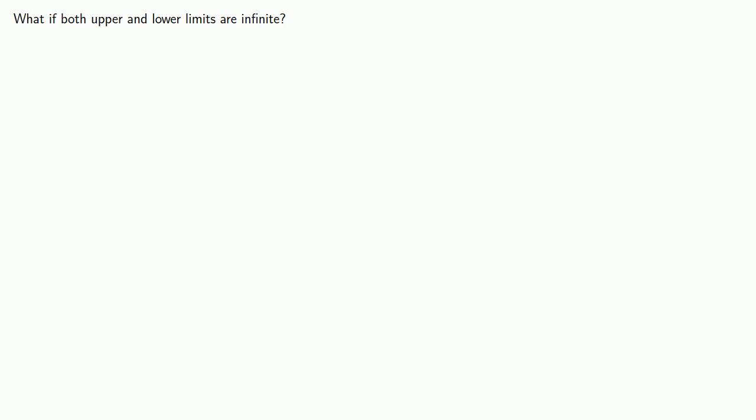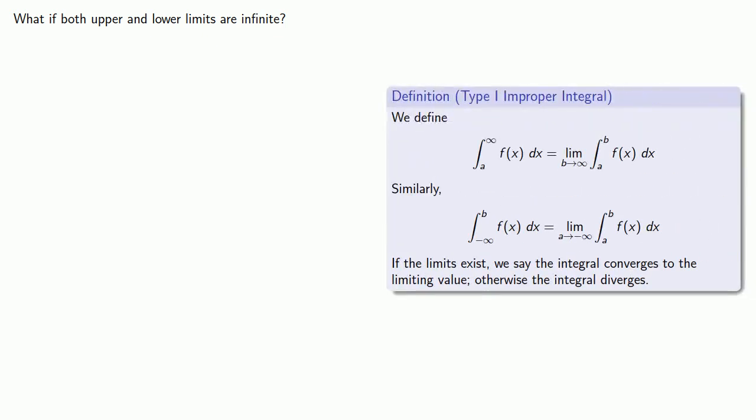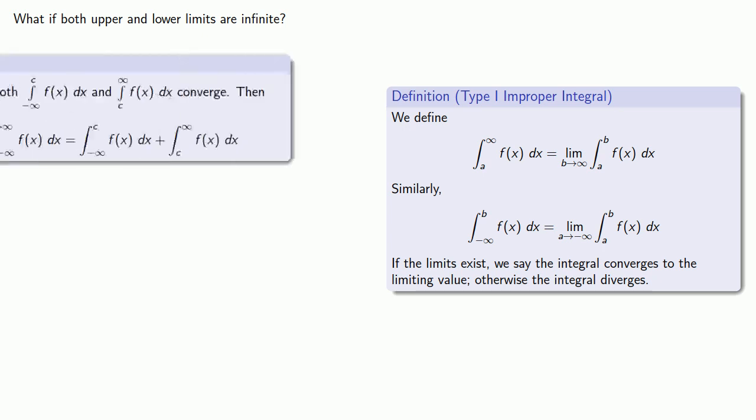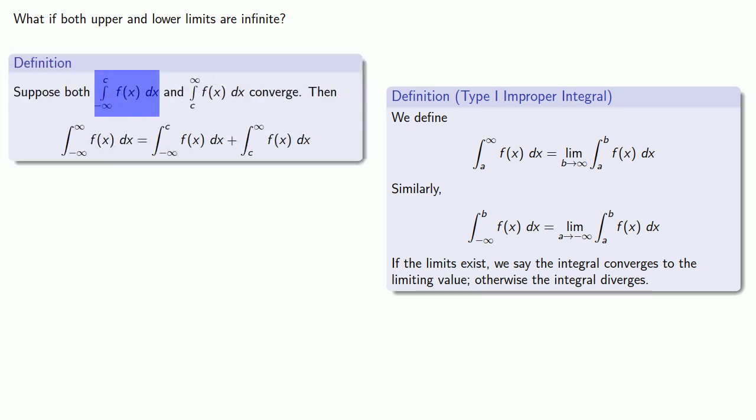Our definition of type 1 improper integrals only allow one of the limits to be infinite. But what if they both are? For that, we'll fall back on the useful property of the definite integral. We can split the interval. So suppose the integral from minus infinity to c and from c to infinity both converge. Then the improper integral from minus infinity to positive infinity will be the sum of the two convergent integrals.